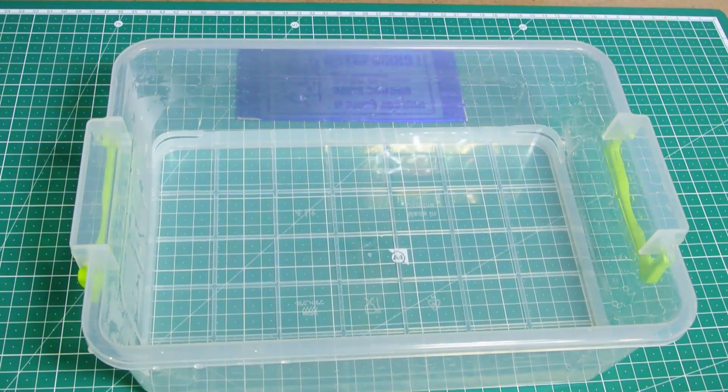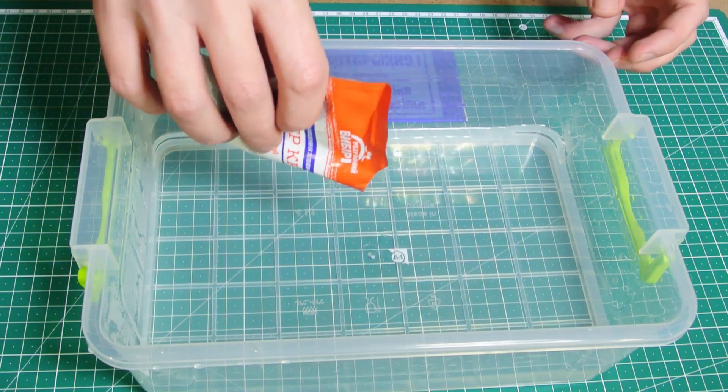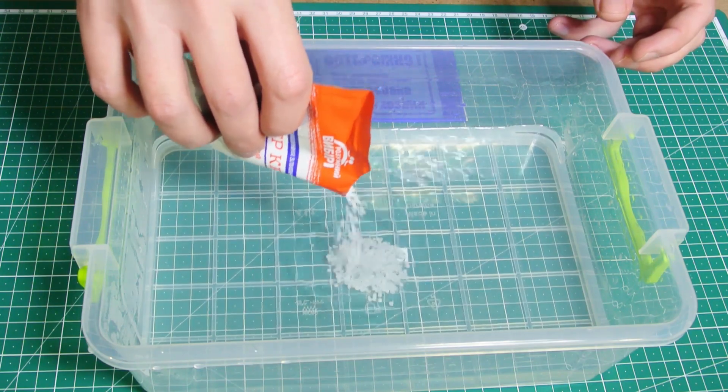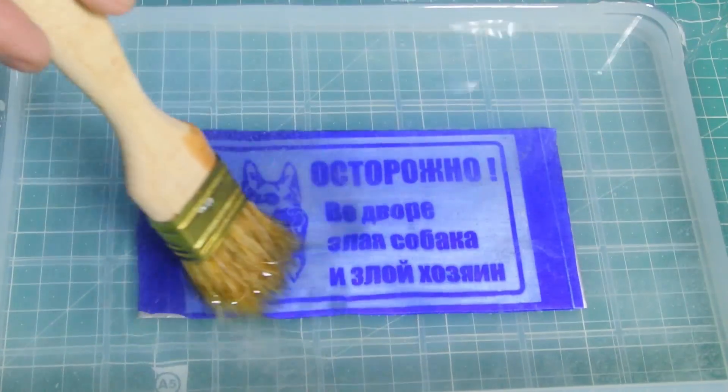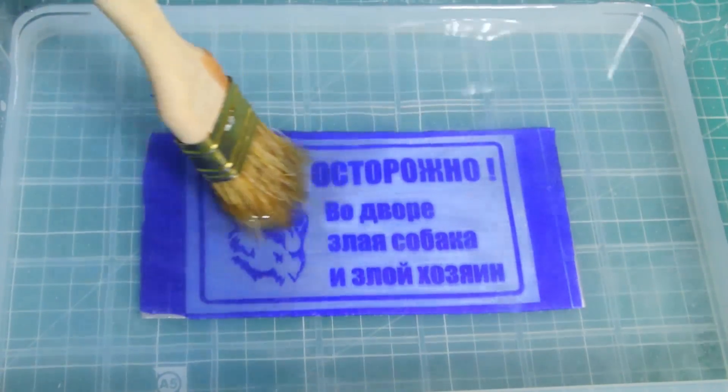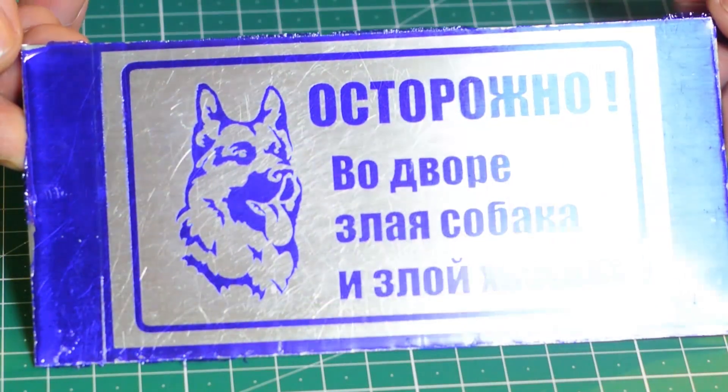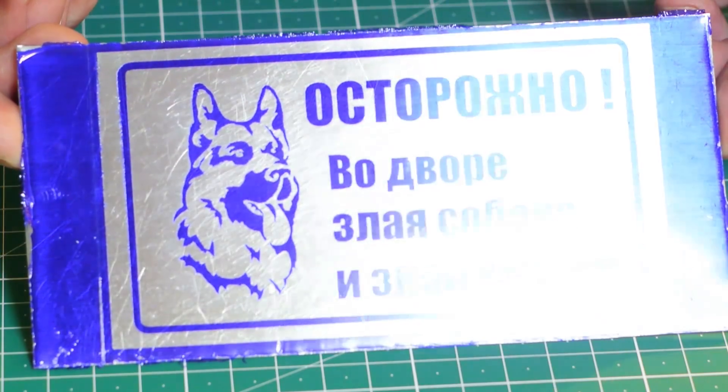Now the unexposed photo resist can be removed by sodium hydroxide. It's very easy to find. It's used to make a solution for cleaning drain pipes. One teaspoon per liter of water would be enough. After a couple of minutes in such a solution, the unexposed photo resist is easily washed off.